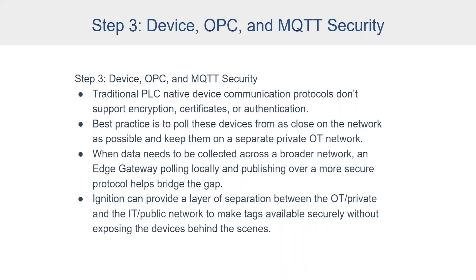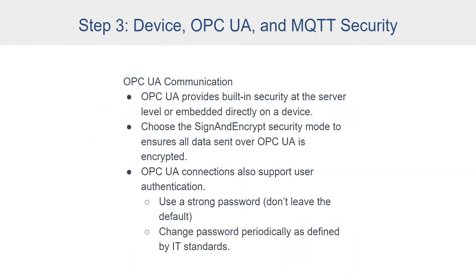Direct connections from Ignition to OPC UA and MQTT devices are generally the most easily secured connections, but we can still secure other connections as well. Talking about OPC UA and MQTT, let's go into those a little bit. OPC UA provides built-in security at the server level and also embedded directly on a device. When you connect, you can choose the sign and encrypt security mode to ensure that all data sent over OPC UA will be encrypted.